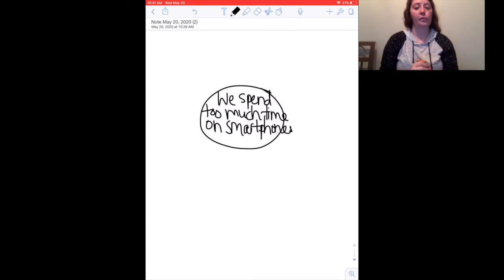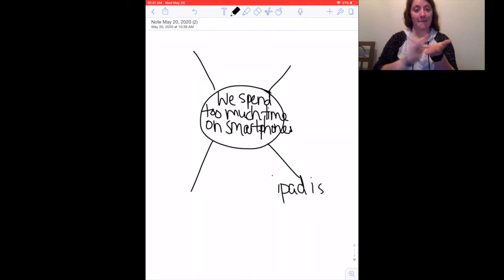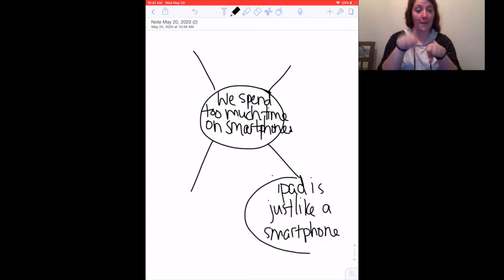The next thing with concept mapping is you are going to start writing things that relate to your opinion in the circles around your middle circle. So maybe I'll say that iPad is just like a smartphone. And that could be like another idea that's connected. And I might want to say a little idea coming out of that is I use iPad all day, every day for school. iPad is used every day, all day.